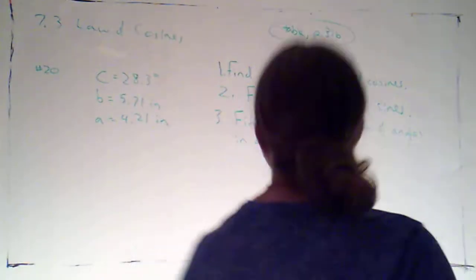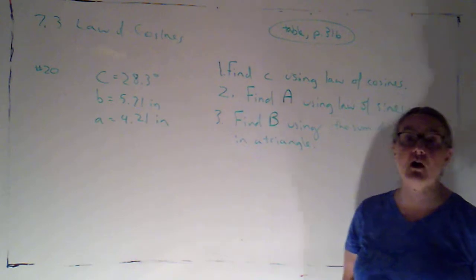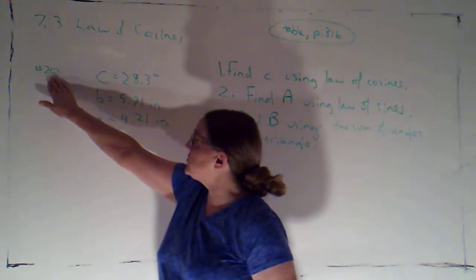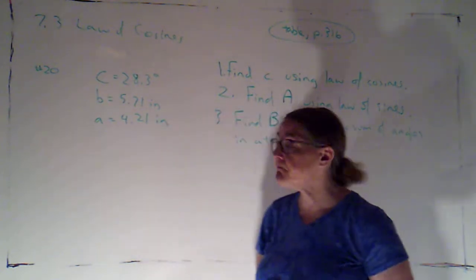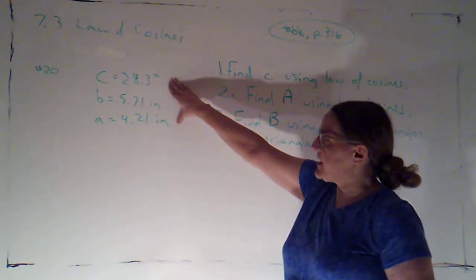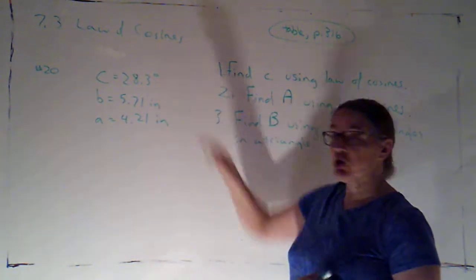Alright, in this example we're going to start using the law of cosines in addition to the law of sines. So I've actually just chosen an even numbered problem, number 20, from section 7.3. We're given this information - we're given one angle and two sides.